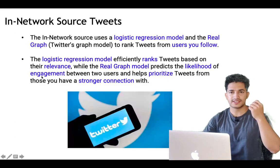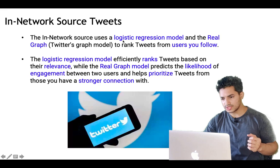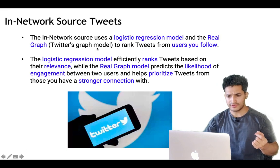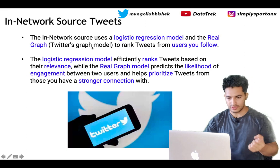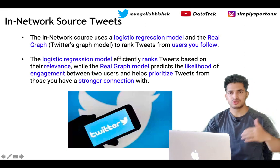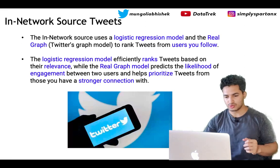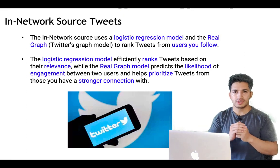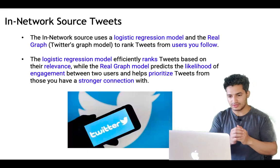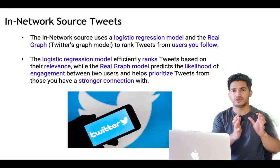For in-network tweets, the in-network source uses a logistic regression model and Real Graph — Twitter's graph algorithm — to rank tweets from users you follow. The logistic regression model efficiently ranks tweets based on their relevance, while Real Graph predicts the likelihood of engagement between two users and helps prioritize tweets from those you have a stronger connection with. Real Graph pushes up tweets from users you follow with stronger connections, while logistic regression finally ranks them, and 750 are sent to the ranker.